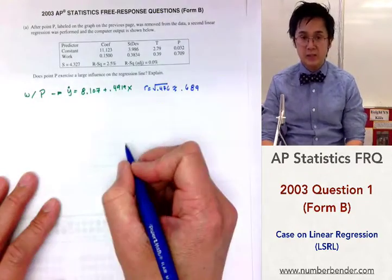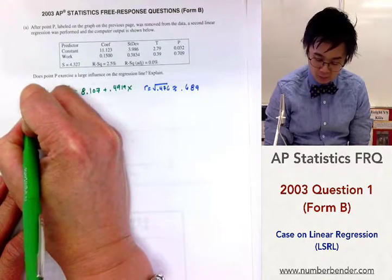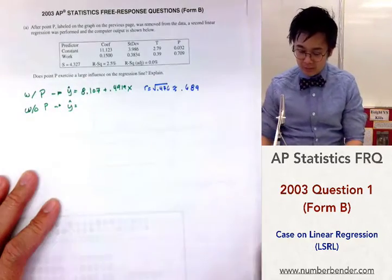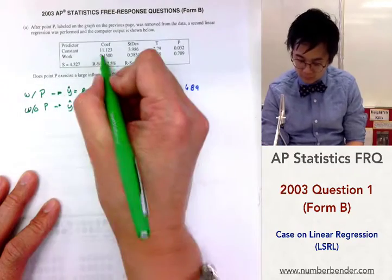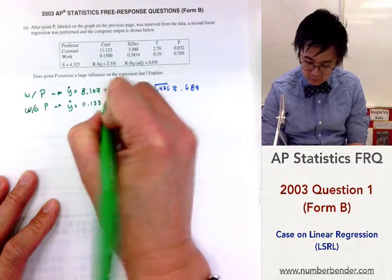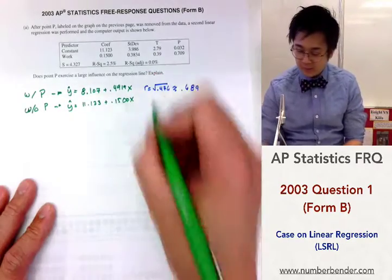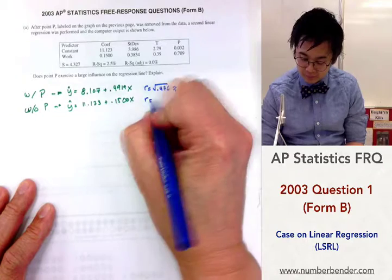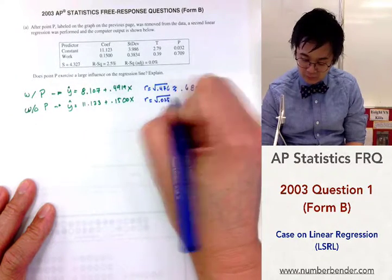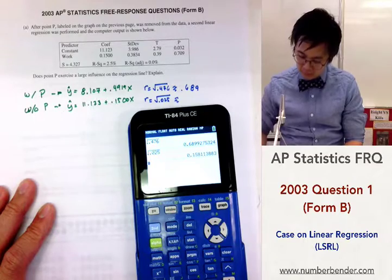And for the other linear model, without the p, the y-hat is going to be 11.123 plus .150x. And our correlation coefficient, which is square root of .025, is approximately equal to .1581.